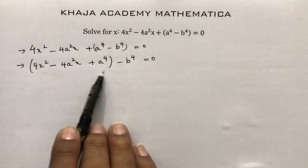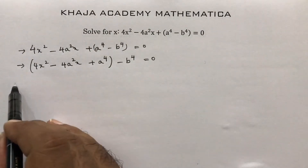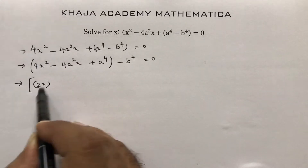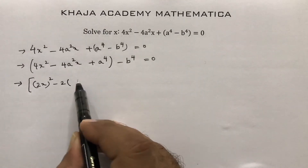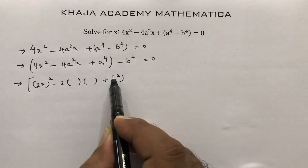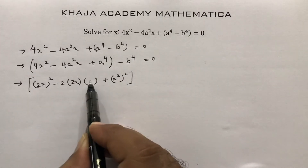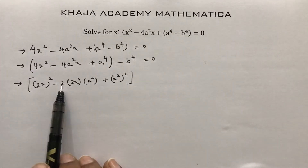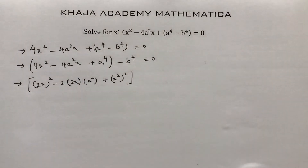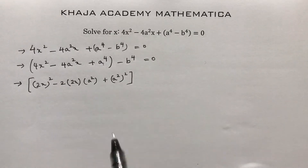Now if you observe carefully, the bracketed part is in the form of a² - 2ab + b². You can write 4x² as (2x)², and a⁴ as (a²)². Then 2 into 2x into a² gives 4xa², which matches the middle term — so it is clearly in the form a² - 2ab + b².